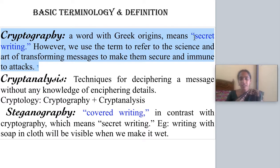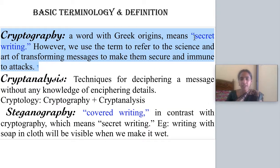The next one is cryptanalysis. The receiver can know the original message in an ethical way by performing some operations. But in an unethical way, with some trial and error or by guessing, if you are trying to grab the plain text, that is called cryptanalysis.